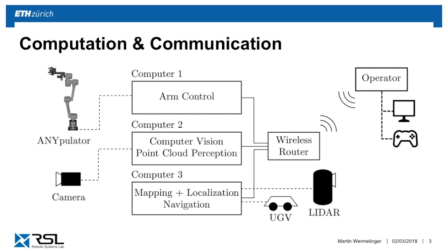Further processing with point clouds or other sensors can also be done on the application computer. All critical software runs onboard, but through a wireless connection we can also broadcast camera streams and robot information to an operator PC. This is mainly for visualizing the state of the robot, but you can also send high-level commands or teleoperate the robot.